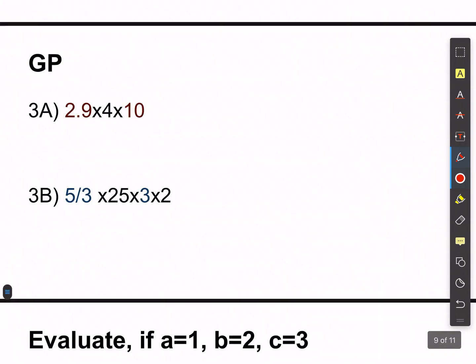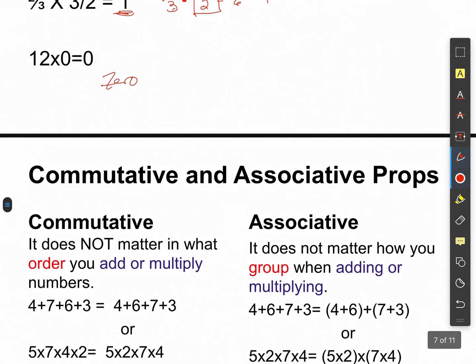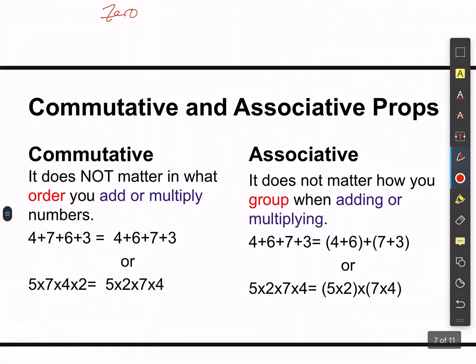A couple more terms, then we'll do some practice problems and homework. The commutative and associative properties: the commutative property says it does not matter in what order you add or multiply numbers. Very important — these are the commutative and associative properties of multiplication and addition. They do not apply with subtraction.